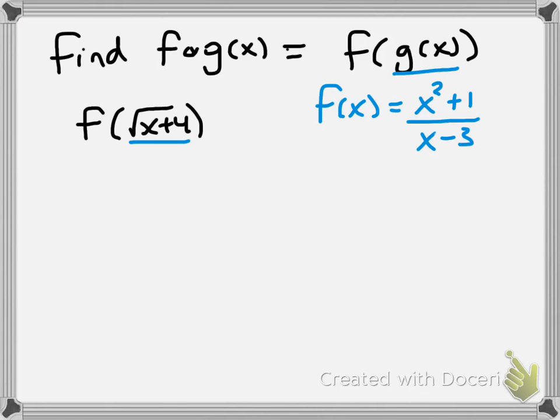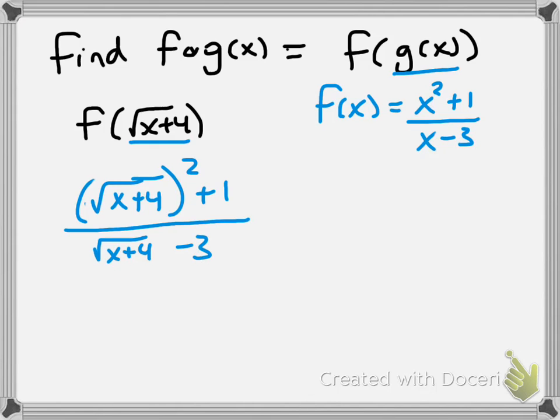So in place of x, I'll have, instead of x squared, I'll have the square root of x plus 4 quantity squared plus 1 over the square root of x plus 4 minus 3.